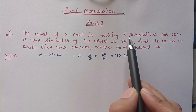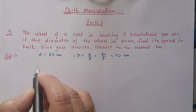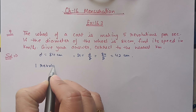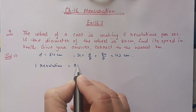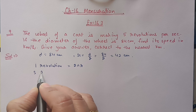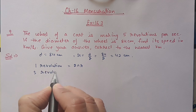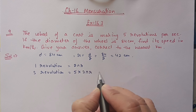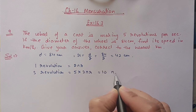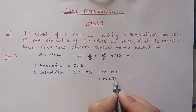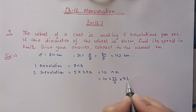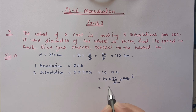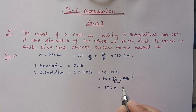Five revolutions means five circumferences. One revolution is equal to 2πr, and five revolutions will be 5 × 2πr, or we can say 10πr. Substituting π = 22/7 and r = 42, we can cancel 42 with 7 to get 6, and after multiplication we get 1320 centimeters. So the wheel covers 1320 centimeters in one second.